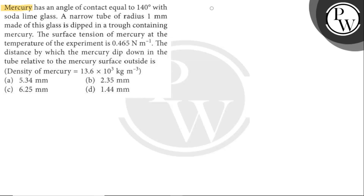Mercury has an angle of contact equal to 140 degrees with soda lime glass. A narrow tube of radius 1 mm made of this glass is dipped in a trough containing mercury.